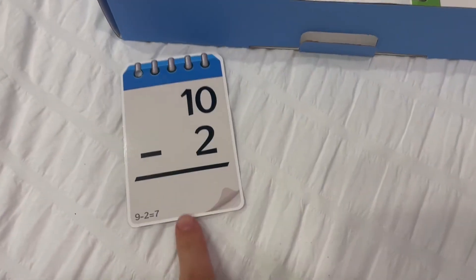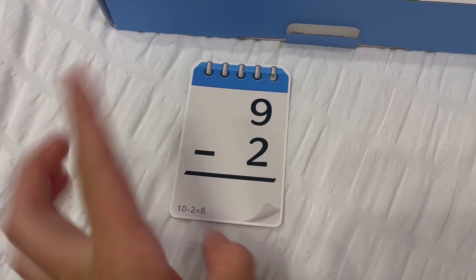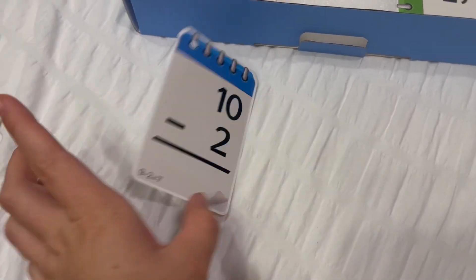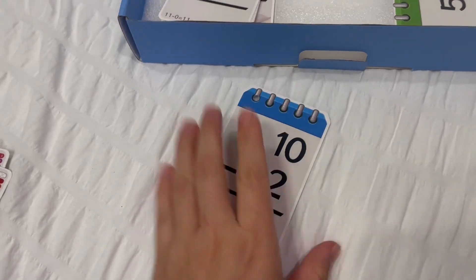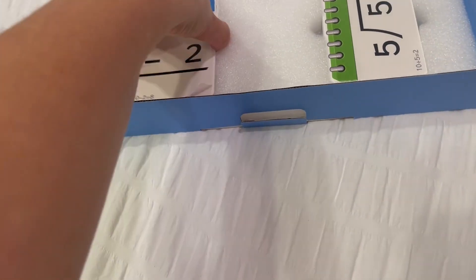And then also yeah it gives the answer right here too, so if you want to know. So like nine minus two is seven. If you're on this side, ten minus two. Ten minus two is eight. So anyway so then you can organize it that way.